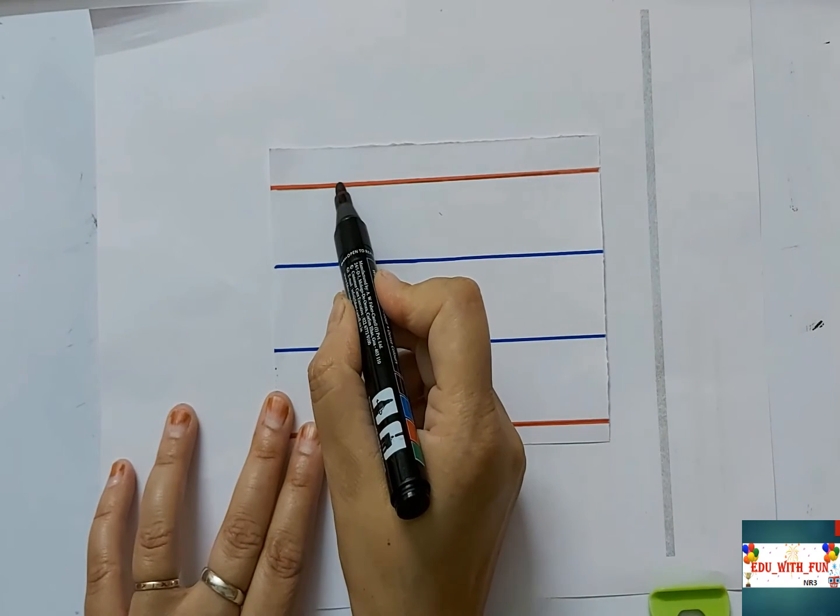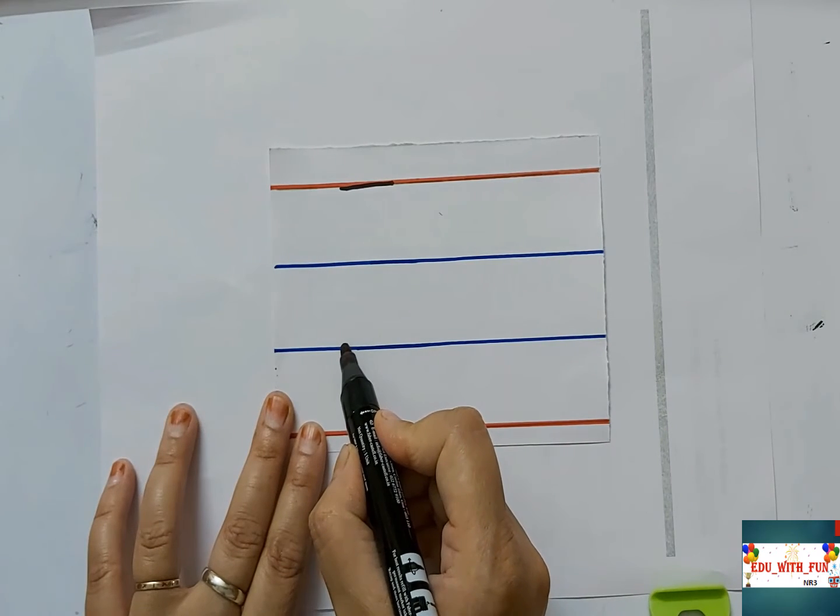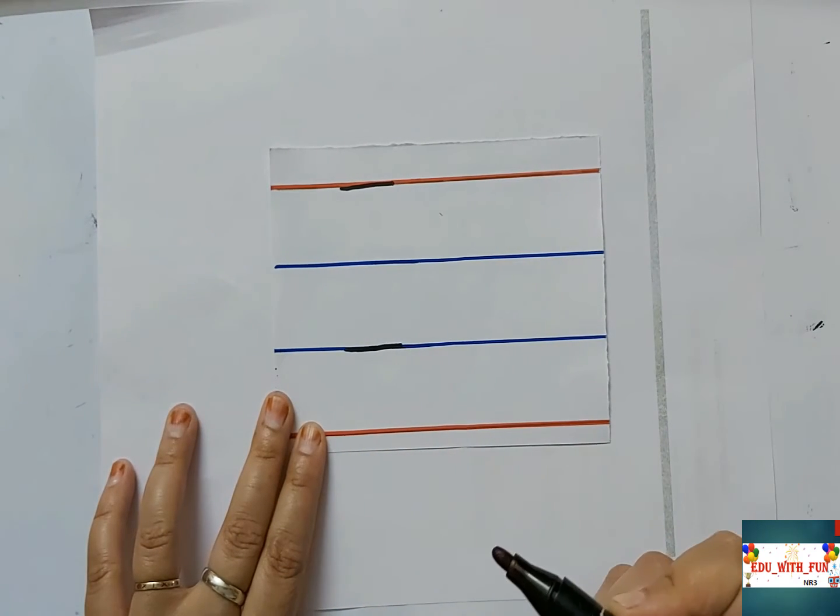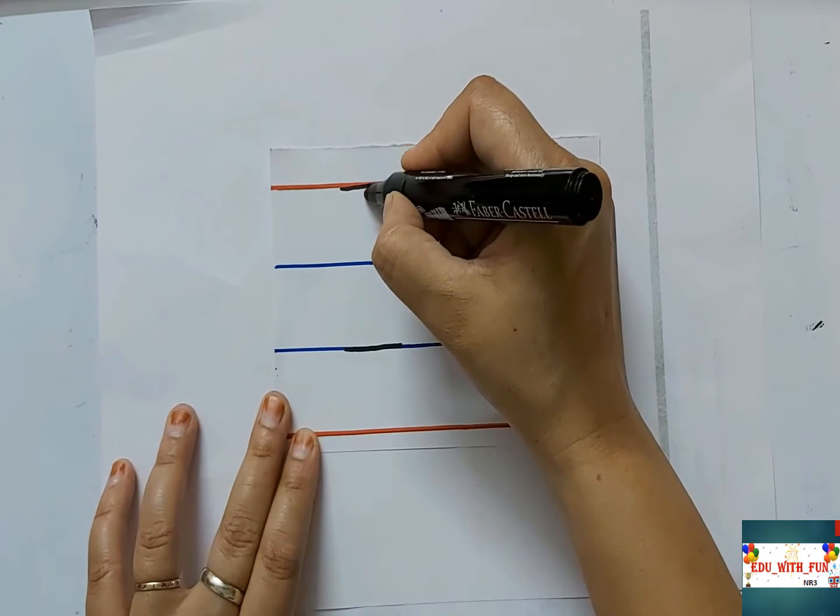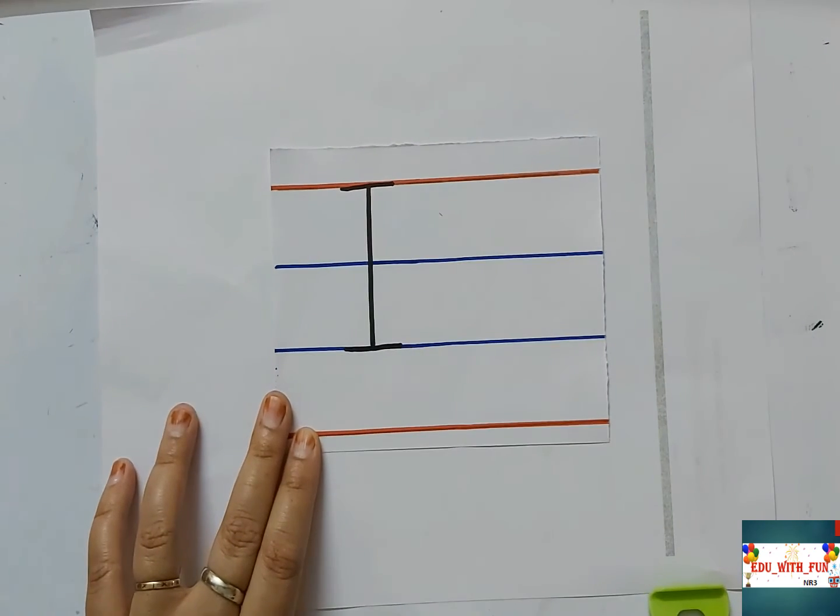For writing capital letter I, draw a sleeping line on first red line and another sleeping line on third blue line like this. Now just draw a standing line from first red line to third blue line. That's it. This is capital letter I.